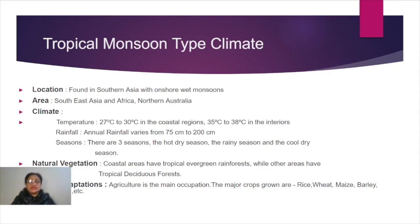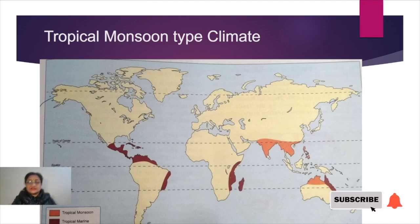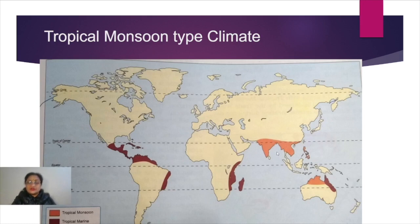The northeast monsoon winds don't cause any rainfall anywhere, but when they cross over the Bay of Bengal region — as visible on the map — they pick up moisture and cause rainfall over the Tamil Nadu coast, that is the Coromandel coast. This is the northeast monsoon season, which is generally a dry season except for a few places under northeast monsoon influence.